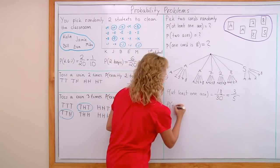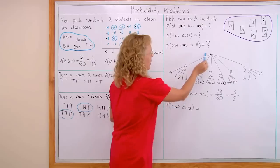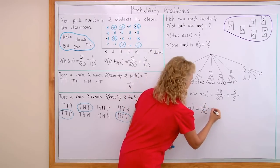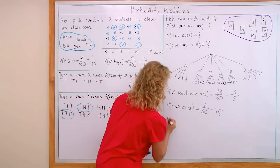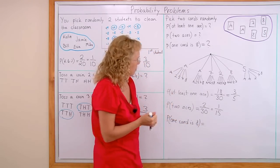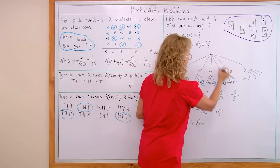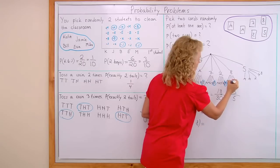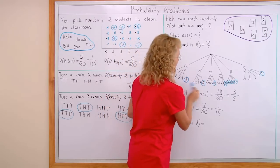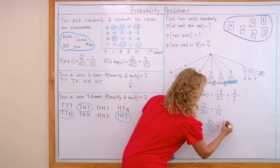The probability of 2 aces: there are only 2 favorable outcomes — ace first then ace second, and ace first then ace second (the other combination). So it's 2 over 30, which is 1 fifteenth. And then one card is 8: ace and 8, ace and 8, 7 and 8, 2 and 8, 8 and any of the others, and 5 and 8 — that's 10 favorable outcomes over 30, which simplifies to 1 third.